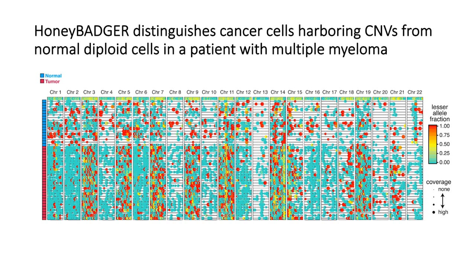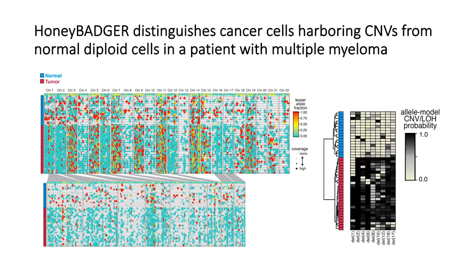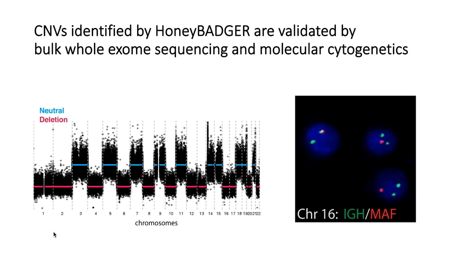In order to demonstrate the utility of HoneyBadger, we first applied it to distinguish cancer cells harboring CNVs from normal diploid cells in a patient with multiple myeloma. Indeed, HoneyBadger was able to identify a number of regions affected by potential CNVs and further infer the posterior probability of each cell harboring each CNV based on the observed SNP patterns. Hierarchical clustering of the resulting posterior probabilities correctly distinguished the cancer cells, which have high probabilities of harboring the identified CNVs, from the normal cells, which have very low probabilities, consistent with what we expect. We further validated the identified CNVs using whole exome sequencing and by molecular cytogenetics, where we can see one dot corresponding to the one copy of MAF on chromosome 16, which is affected by deletion, versus two dots on the two copies of IgH on undepleted chromosome 14 as a control.